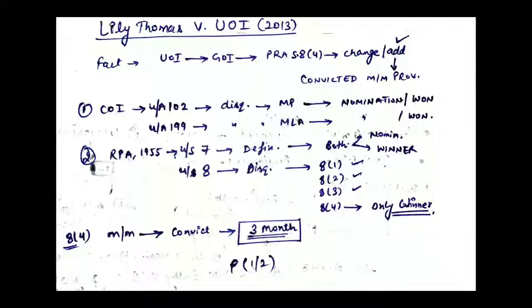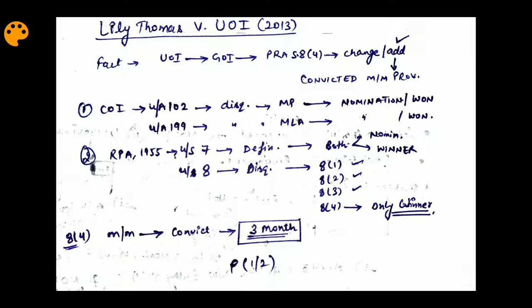Hello everyone. Today in this video we will discuss one case law of the Indian Constitution. The name of the case is Lily Thomas vs. Union of India, 2013. This case is related to MP and MLA disqualification.